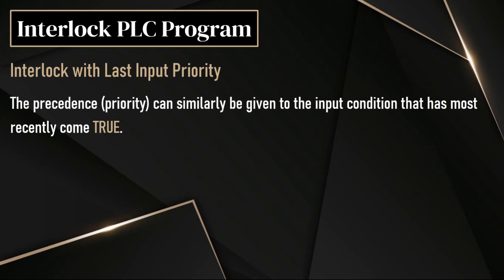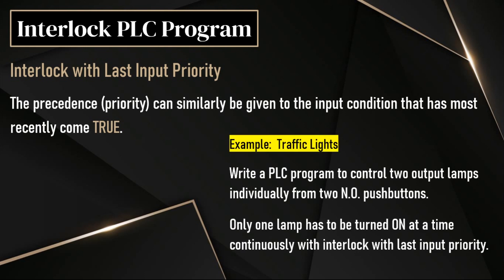In this video, we are going to discuss interlock with last input priority or recent input priority. We already discussed interlock with first input priority, but this is a little bit different. Here we have priority for the last input. One example is traffic lights, where we have two lamps — either walk or do not walk.